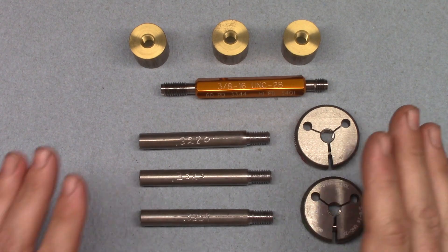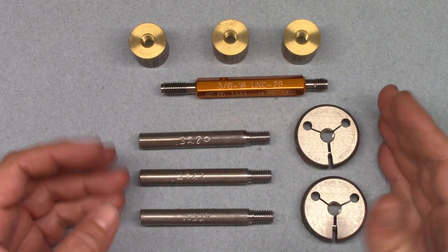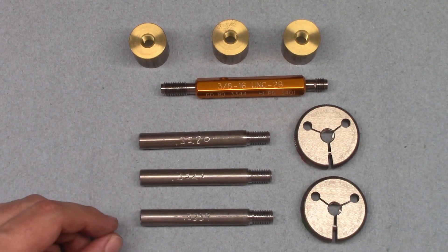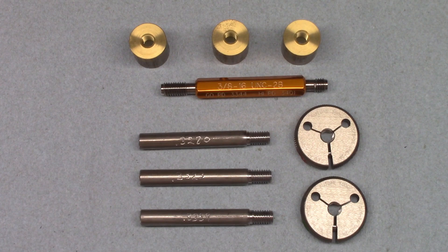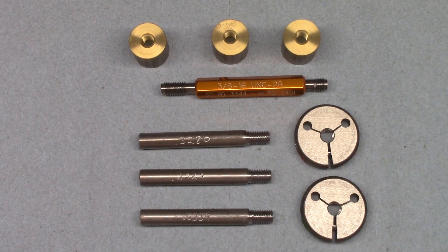Another con is that, again, these don't measure the threads for you. That means when they eventually wear, you may not notice immediately and pass parts that should be failed. They should be checked regularly for wear, although how often probably depends on usage.